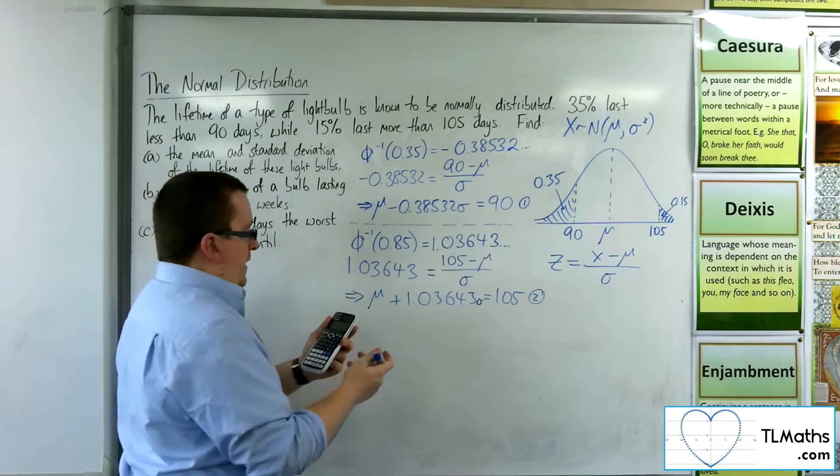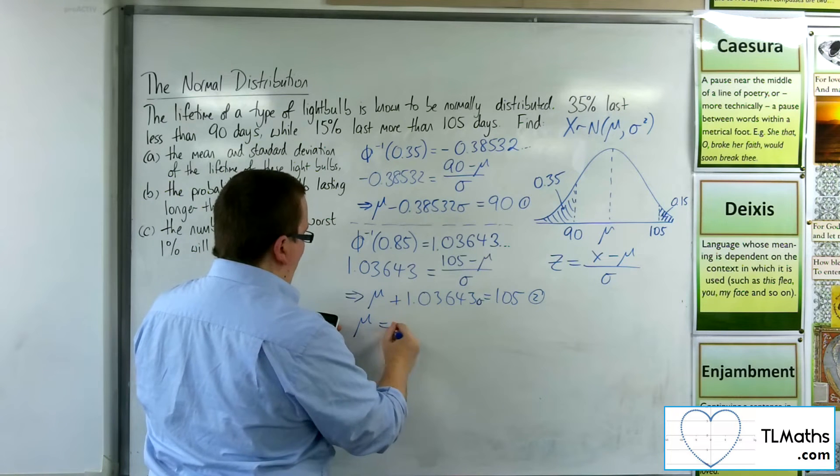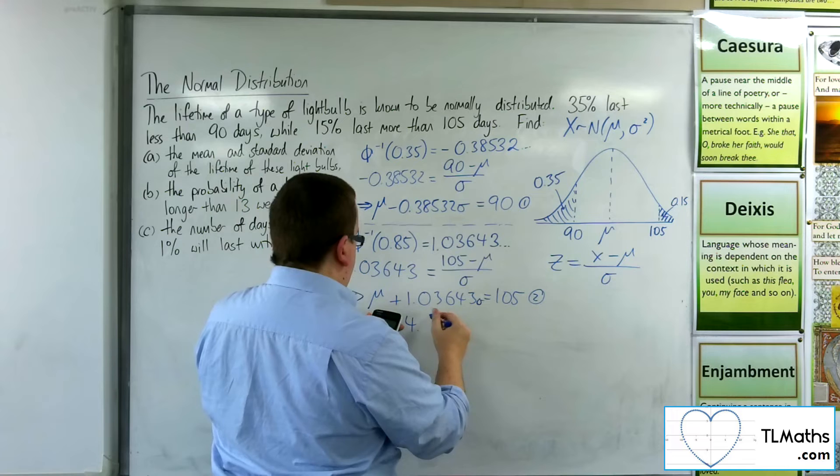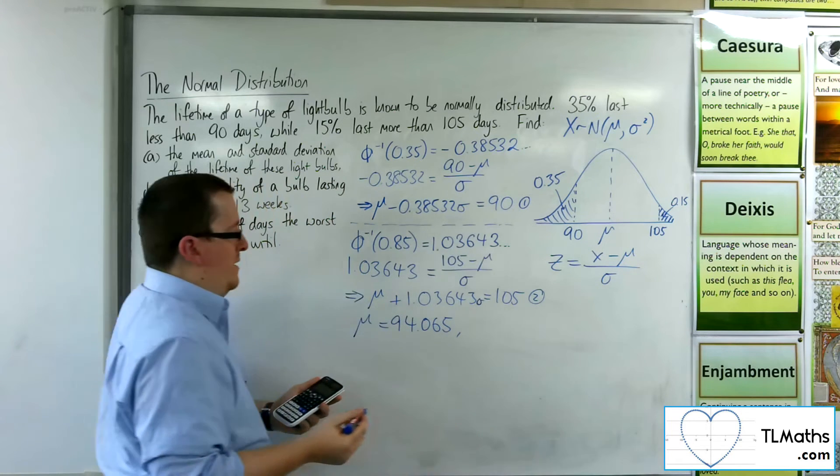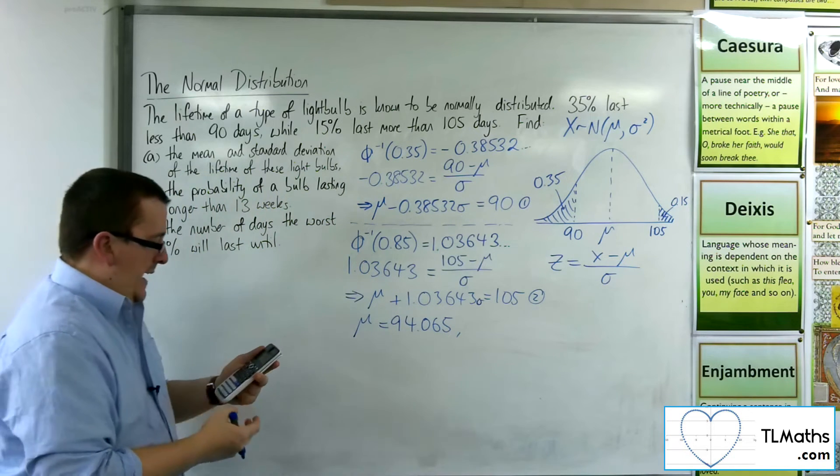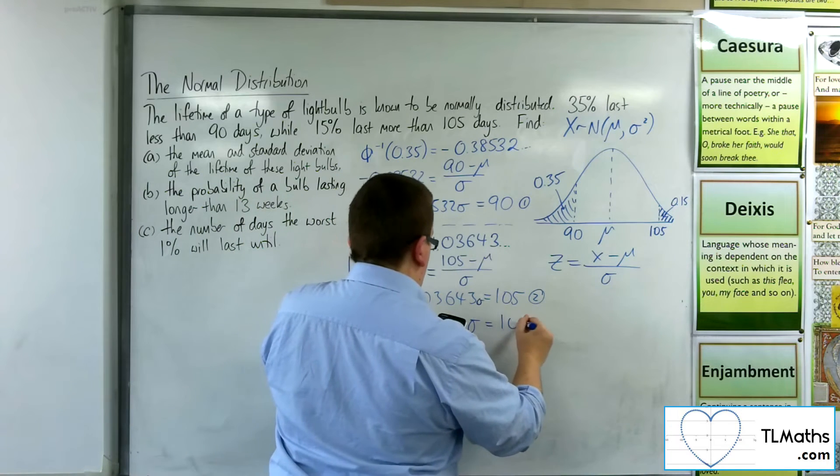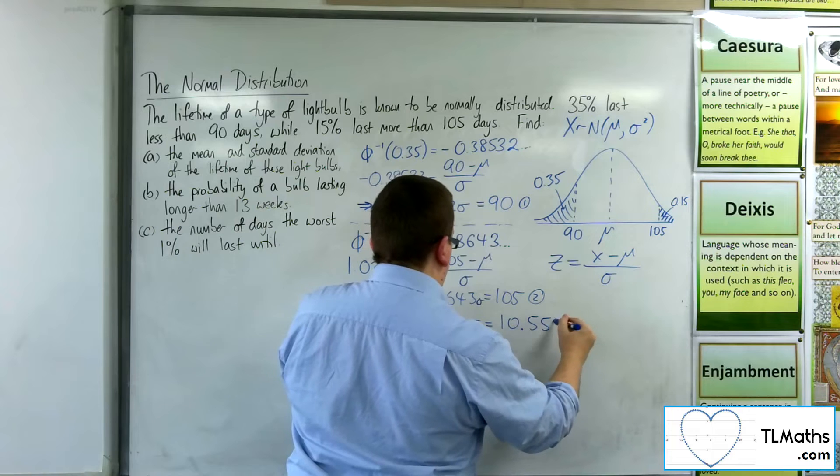And then I've got 1 lot of x plus 1.03643y is equal to 105. And then I get my mu or x as 94.065 to 3 decimal places. And the y value, the sigma, as 10.550.